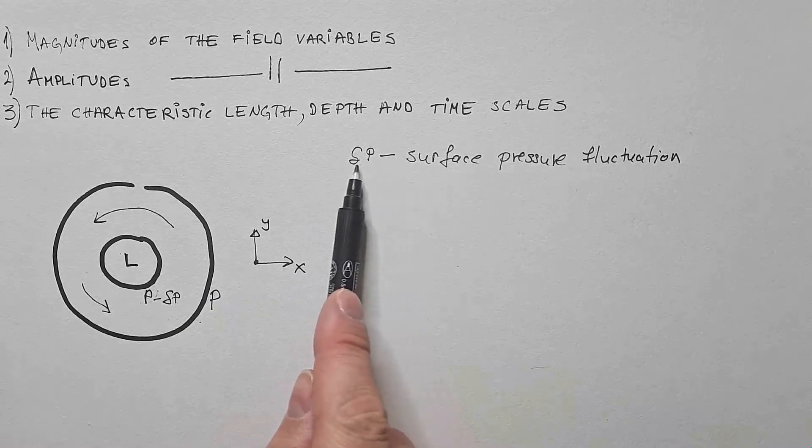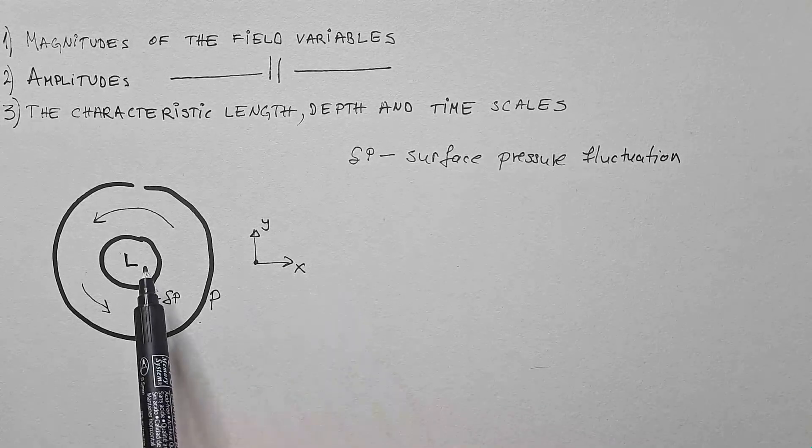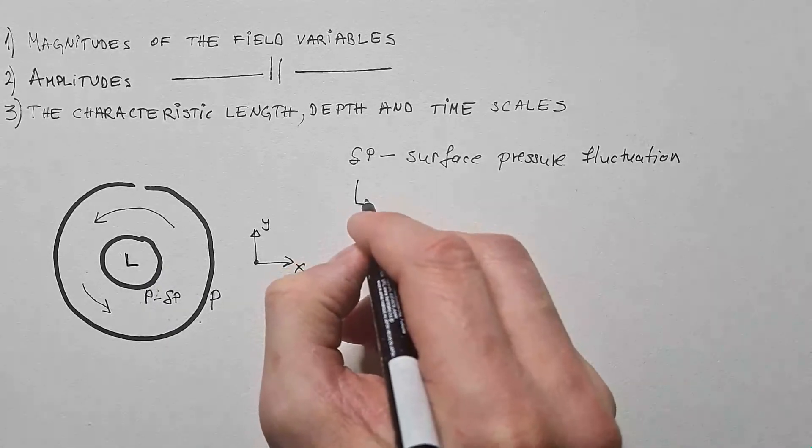And delta P, therefore, quantifies these fluctuations in the mean surface pressure. But these fluctuations occur over some horizontal distance. And we will call that distance L.